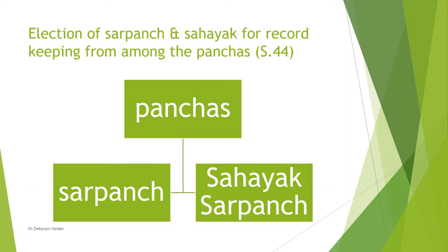Section 44 speaks about the election of Sarpanch and Sahayak Sarpanch for record keeping. The Panchas shall have one Sarpanch who is considered the chief of the Panchas, and the Sarpanch shall have a Sahayak Sarpanch for record keeping.